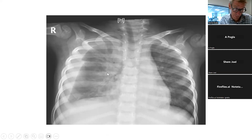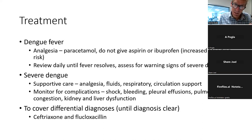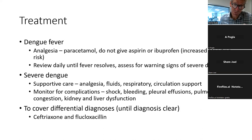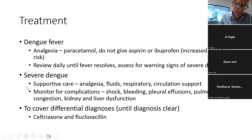Treatment of dengue involves the investigations mentioned, controlling fever — paracetamol helps unless there is major liver dysfunction. Don't give aspirin or ibuprofen because they may increase bleeding risk with thrombocytopenia. If managed as an outpatient, review every day until fever resolves to monitor for warning signs. If there are warning signs or emergency signs, the child needs admission with analgesia, fluids, and respiratory and circulatory support. There is no antiviral or antibiotic that works for dengue — most care is good supportive care.